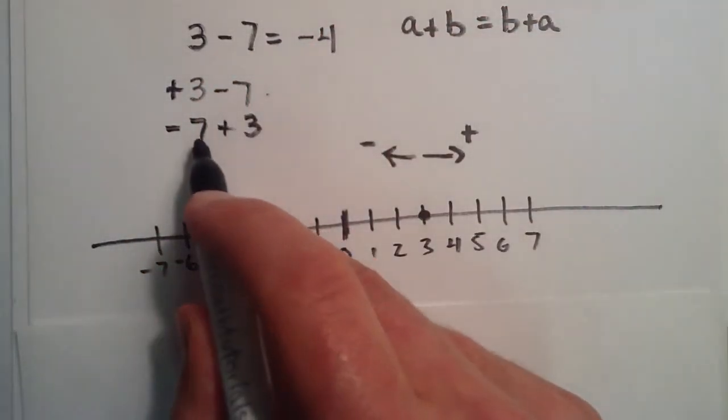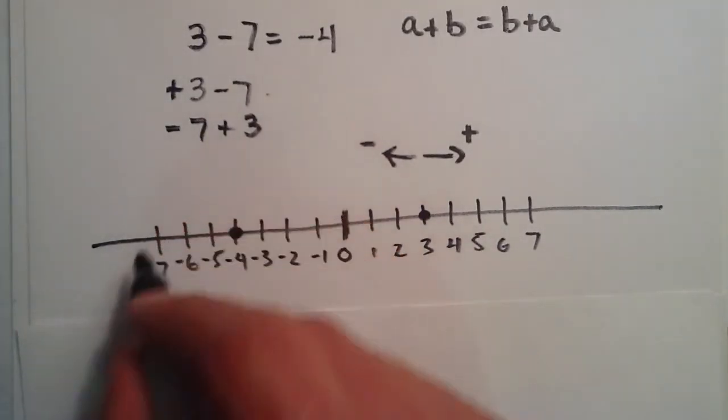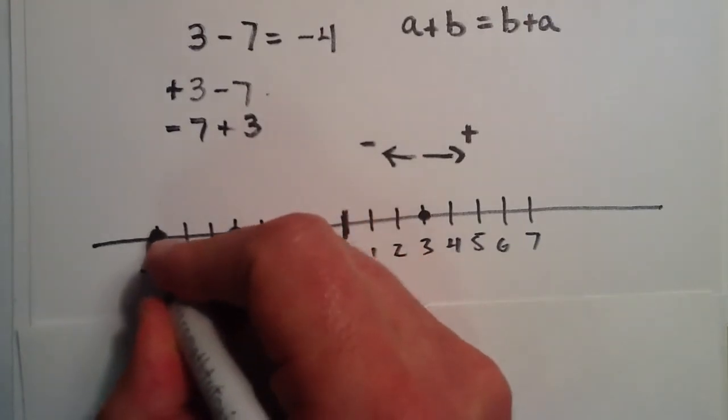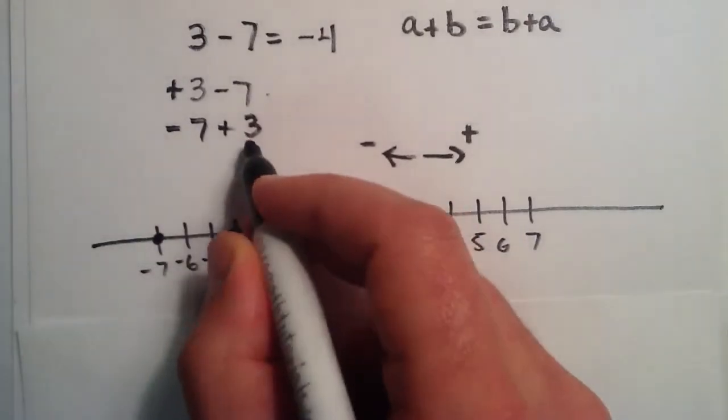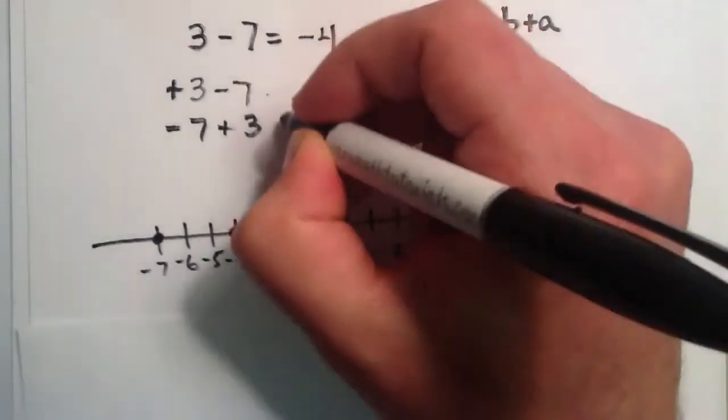So this time, let's say that we owe the bank $7, and we pay them 3 back. So you start at this point, and you add 3, you move to the right, so then you go 1, 2, 3, and you're left with negative 4.